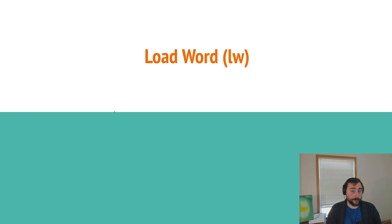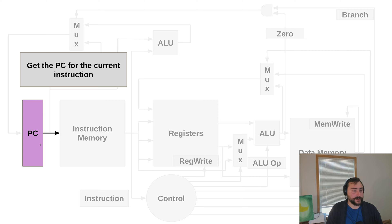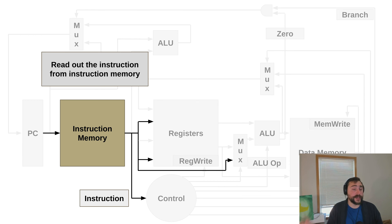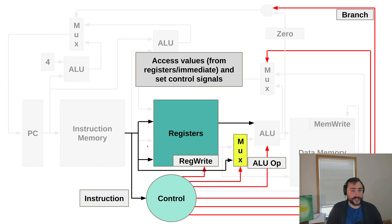We have another instruction we support: load word. We want to load something from memory and put it inside of a register. It starts the exact same way — we get our current program counter value, read out our instruction from instruction memory, which will be our load word instruction. From here, we're going to access two registers and have an immediate: one register operand for our address calculation, the immediate value for our address calculation, and then we'll specify which register we want to load the value from memory into. After this stage, we go ahead and set our control signals — we're doing a register write, setting the ALU op for address calculation, and also that we're doing a read, and that this is not a branch.